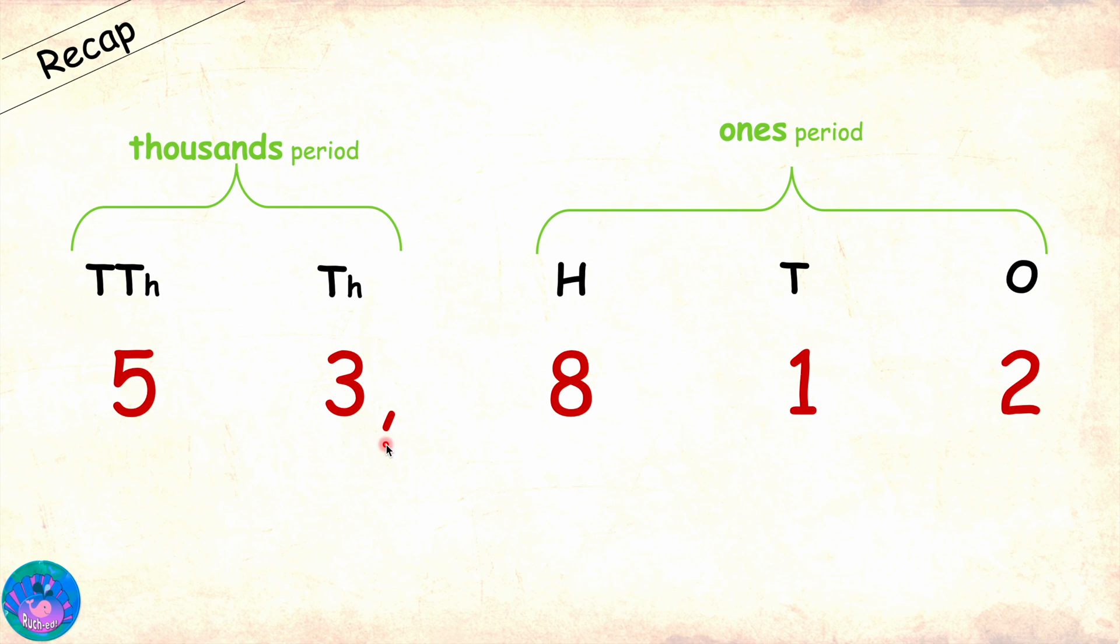We also put a comma between the two periods while writing and while reading the number, we start from the left. First, we read the number in the period and then the period name except ones where we don't say the period's name. So, this number is 53,812.